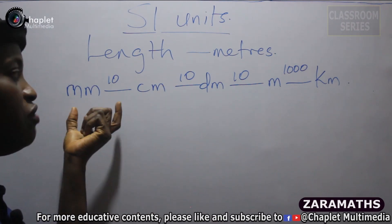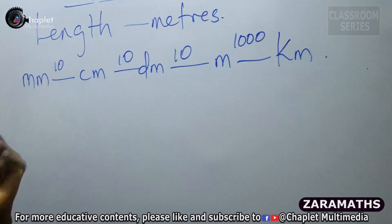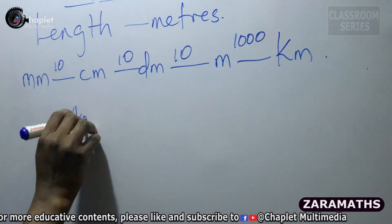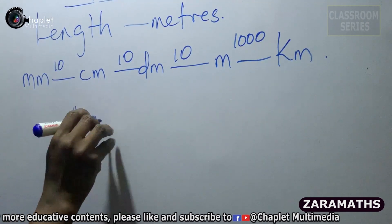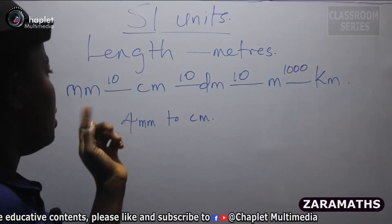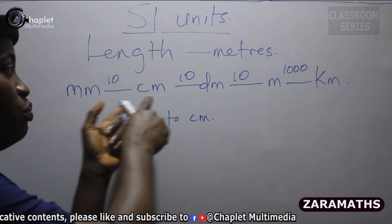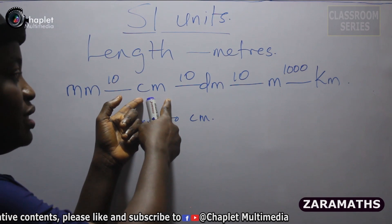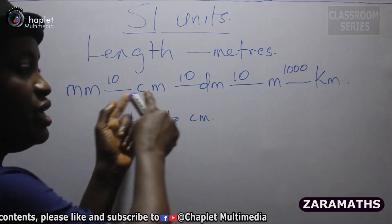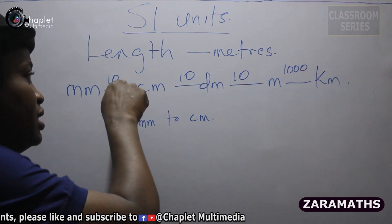1000 meters makes one kilometer. With this in mind, you'll be able to convert from various units to another. For example, if you want to convert 4 millimeters to centimeters — because millimeters is smaller compared to centimeters, you are moving forward, therefore you are going to be dividing by 10.